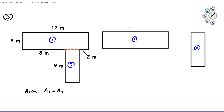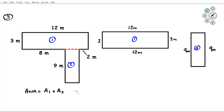Rectangle one is straightforward: the width is 12 meters and the length is 3 meters. For rectangle two, the length is nine — and since opposite sides of a rectangle are congruent, both sides are nine units long. We still need to find the width of rectangle two, which requires some calculation.